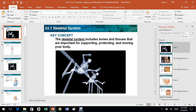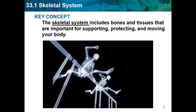Hello, this is Josh Patel back again with another biology video. Today we're going to be doing chapter 33 which is protection, support, and movement. We're going to start with 33.1 which is the skeletal system. The skeletal system includes bones and tissues that are important for supporting, protecting, and moving the body.